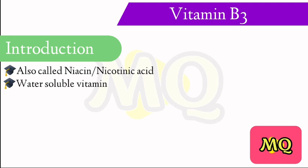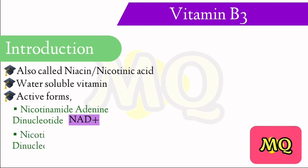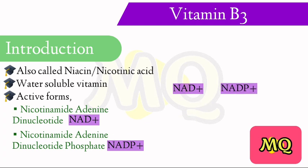The active forms of vitamin B3 are nicotinamide adenine dinucleotide (NAD+) and its phosphorylated derivative nicotinamide adenine dinucleotide phosphate (NADP+).